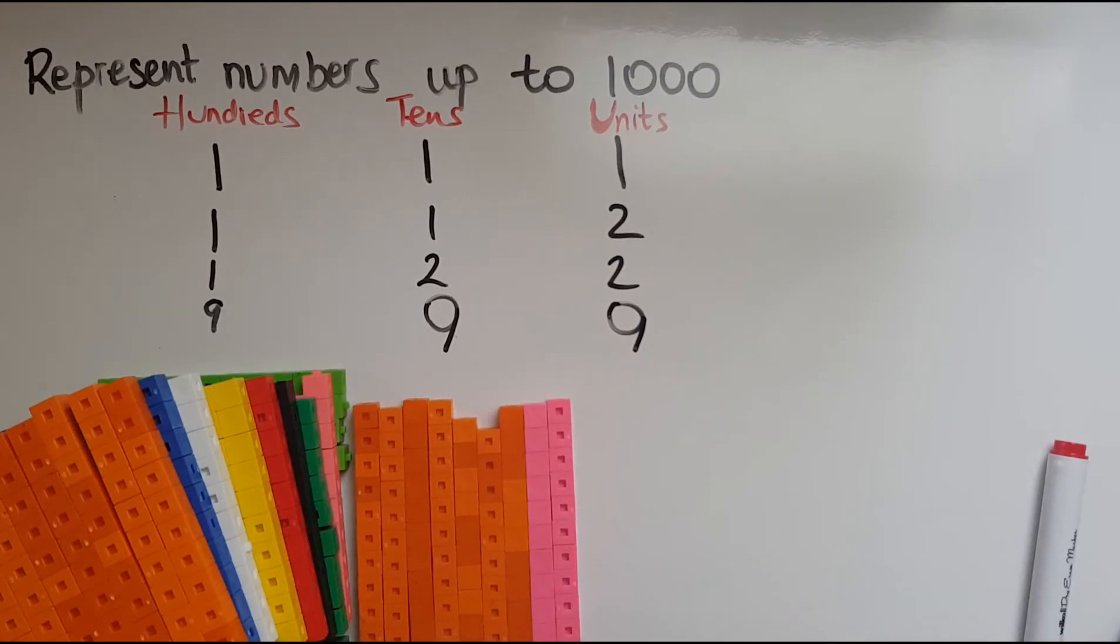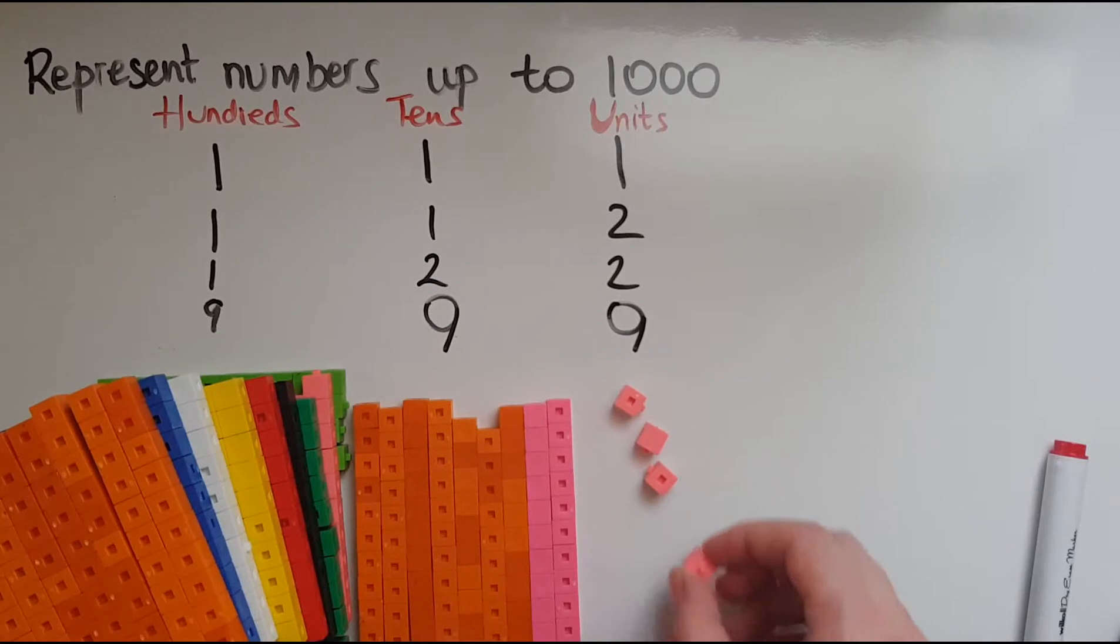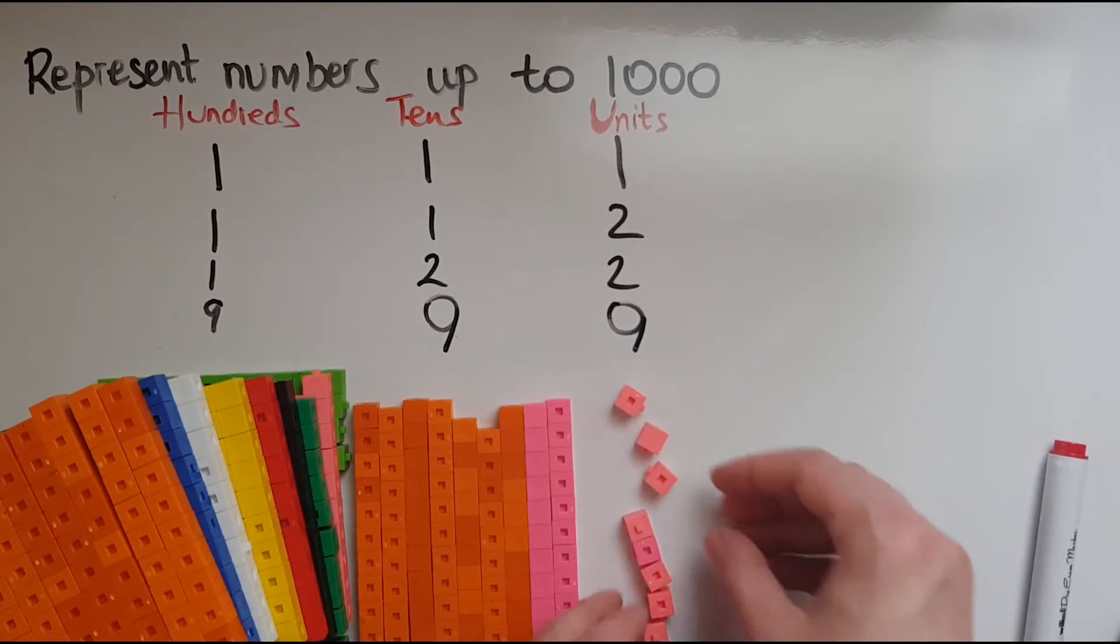So there are 9 blocks of 10 and there are 9 single units. So we've got 1, 2, 3, 4, 5, 6, 7, 8, 9.